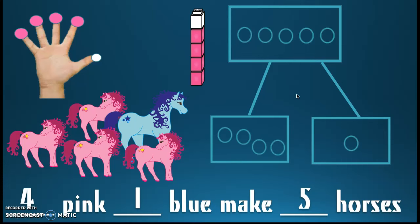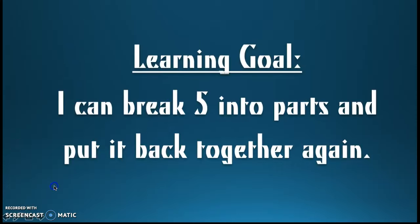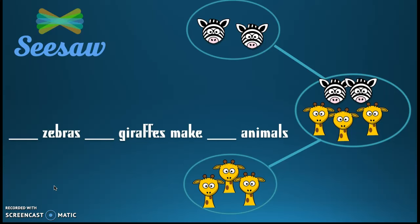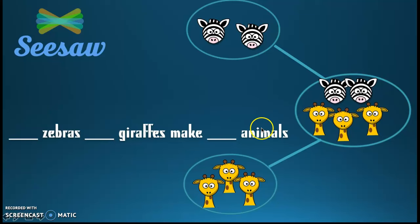We are just showing the parts of five all over the place! We showed them by talking about it in our words, by using our counting cubes, by using our hands, and in the number bond. Our learning goal says: I can break five into parts and put it back together again — that's exactly what we've been practicing. Now it's your turn. Finish the sentence for what you'll send your teacher on Seesaw: blank zebras, blank giraffes, make blank animals. Look at the number bond — how many zebras, how many giraffes, and how many does that make all together? Fill that out and send it to your teacher. Good luck, friend!